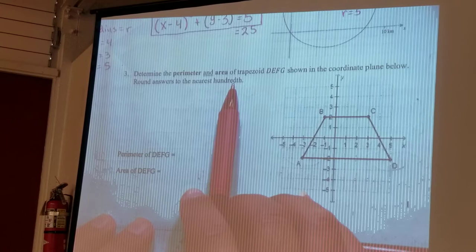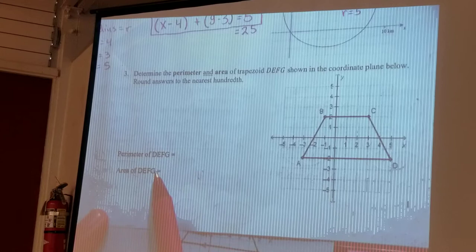Round answers to the nearest hundredth, so second decimal point. All right, so the first thing it's asking is for the perimeter and the second thing is the area.